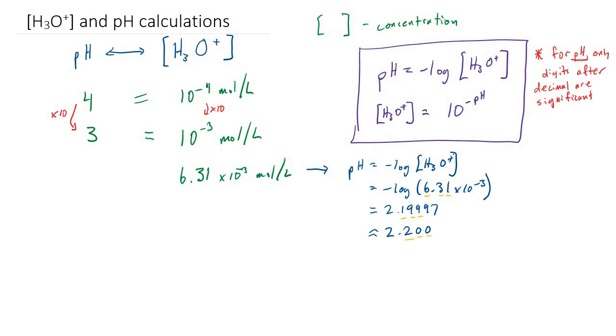For hydronium ion concentration that's just the normal number. So that gets counted like normal for significant digits. But pH only numbers after the decimal are significant. So 3 significant digits reads like this. And we don't need to write any units beside pH so I can fill that in here. 2.200 is the pH corresponding to 6.31 times 10 to the minus 3 moles per liter of hydronium ions.